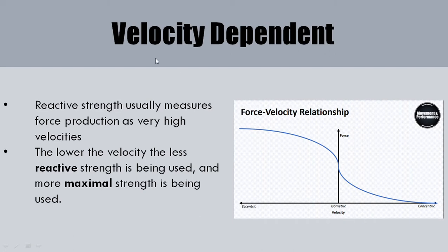In terms of velocity dependency, we're looking at the high-velocity end of the force-velocity curve, where the forces we produce aren't too high but the velocity is very high. Someone with very good reactive strength will be able to produce the same velocity but with higher forces, so the curve shifts up.